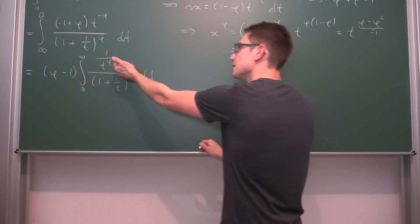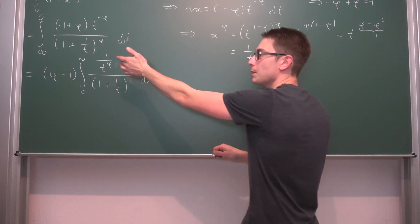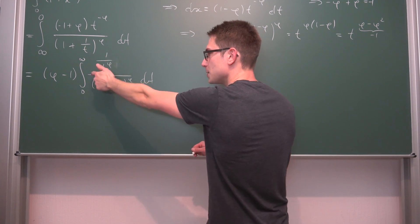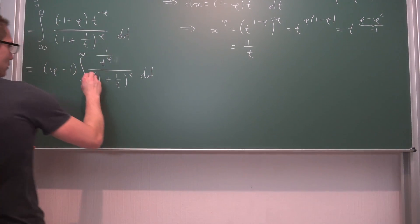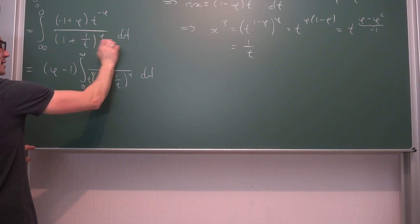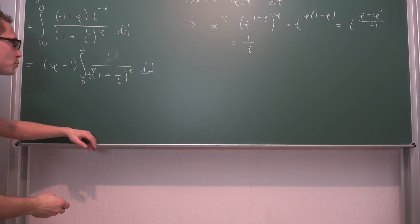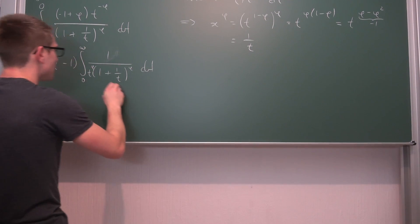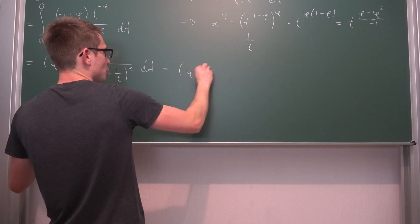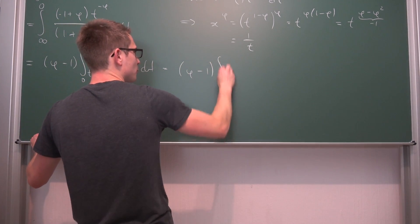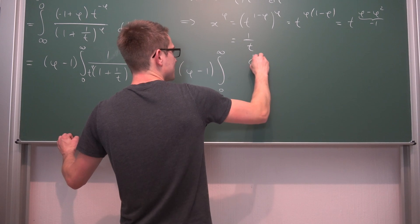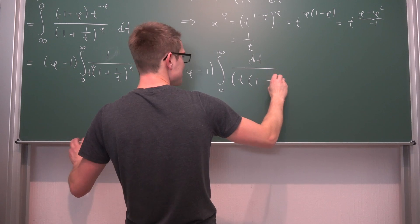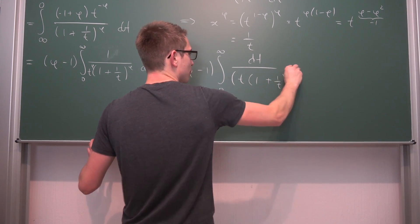Now I have rewritten it in this form just because we can make use of a simple property of multiplication of fractions: we can bring the 1 over t to the denominator. Bringing this down here leaves us with this very expression. They both have the same exponent, meaning we can rewrite all of this as phi minus 1 times the integral from 0 to infinity of dt divided by t times 1 plus 1 over t, and all of this to the phi.